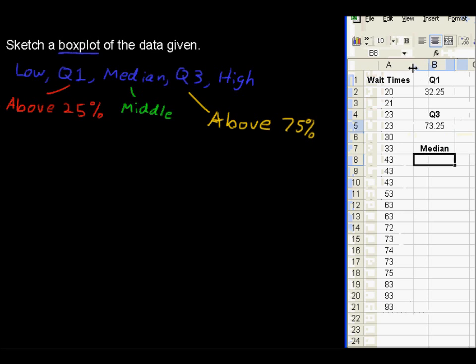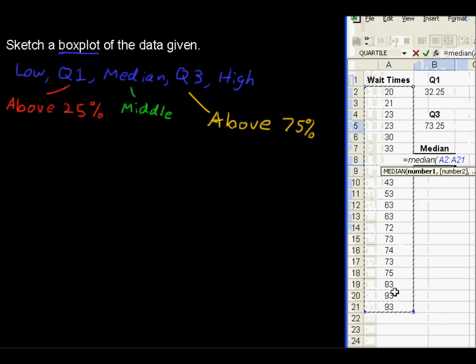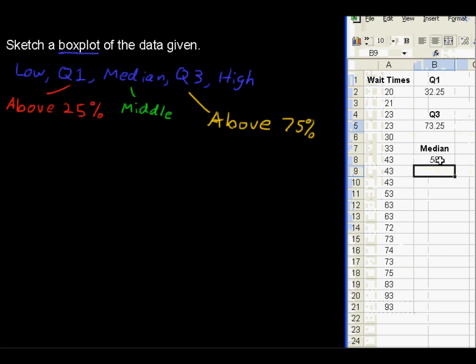Median, if you forget that it is exactly median for the function name, you of course can find that with the function key, or I'll just type in equals median, and choose these numbers or this data, close the parentheses, and we've got it. We have 58 for the median.